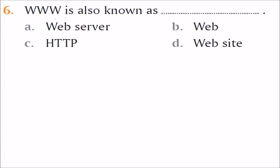WWW is also known as what? It is not a website or web server — a website is a page stored on a web server. HTTP is the protocol used for accessing websites from the web server and presenting it through the web browser. So WWW is also known as the Web, and the correct answer is B.